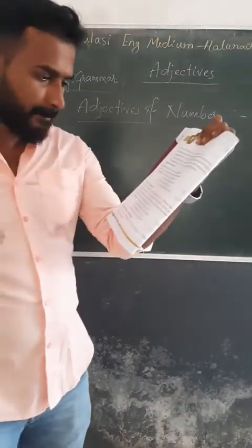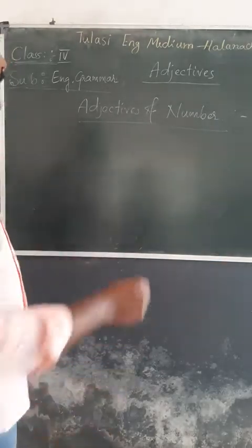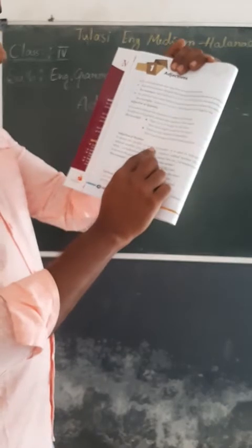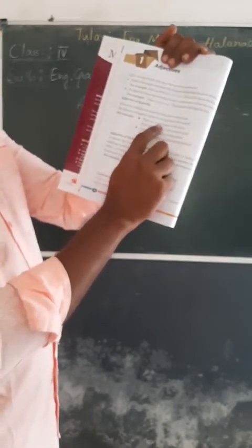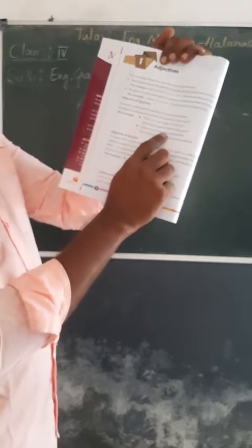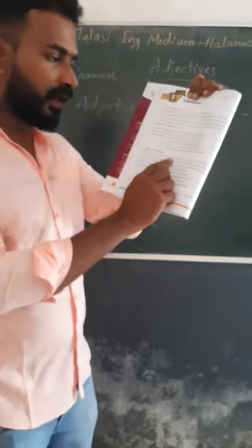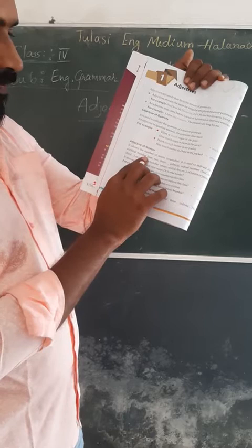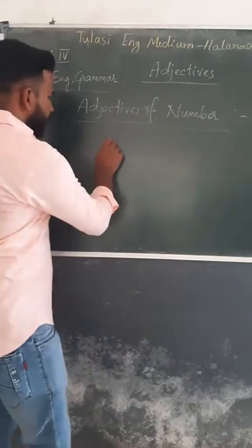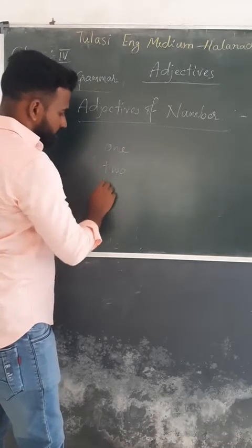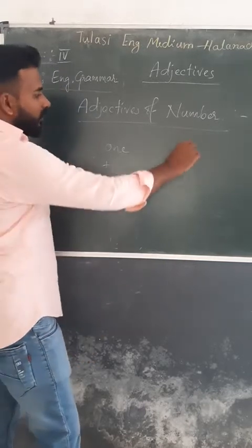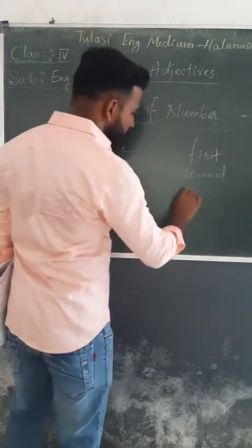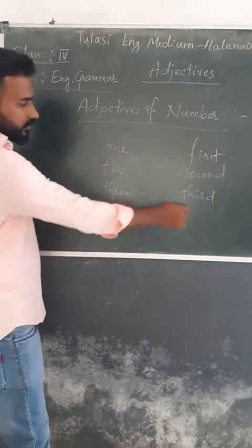Next: adjectives of number. These include cardinal numbers and ordinal numbers. Cardinal numbers are like 1, 2, 3, 5 — they go until infinity. Ordinal numbers are first, second, third, and so on. Adjectives of number also include indicative numbers like 'many,' 'few,' and 'several.' They answer the question 'how many' and refer to countable nouns.